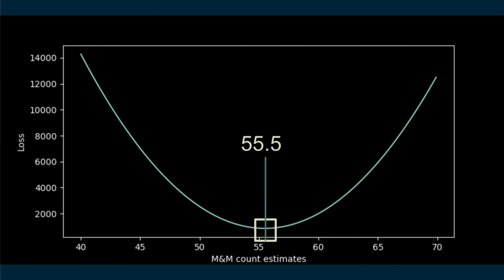Our model, central tendency, had a single parameter, the estimated number of M&Ms, that was adjusted to minimize a loss function. Most machine learning models have more parameters than this. Many layered neural networks can have millions of parameters, but the underlying process is similar.